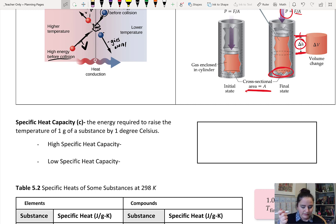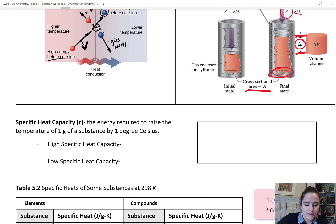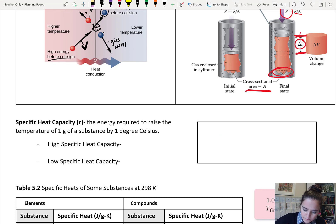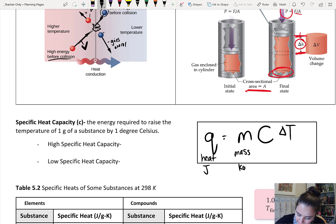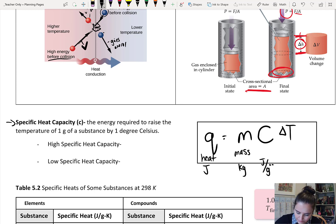Specific heat capacity, the letter C, is the energy required to raise the temperature of one gram by one degree. This is one of our key equations for this unit. It is Q equals mcΔT, where Q is heat energy in joules, m is your mass, C is your specific heat capacity — normally in joules per gram degree Celsius, though sometimes you will see it in moles, which is called the molar heat capacity.